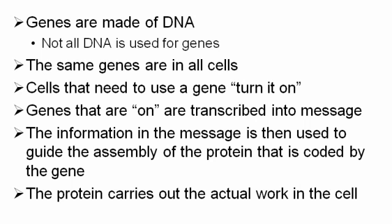And so to summarize this part of the talk, genes are made up of DNA, but not all of the DNA. In fact, very little of the DNA in our bodies is used actually to make genes. The same genes are in all cells, and so cells that need to use Pax-6 or other types of transcription factors need to turn the genes on. A cell does this by transcribing the gene into a message, and so a gene that is on will be transcribed into a message that we can see in the embryo just like the Pax-6 stain in the mouse embryo that I showed you a minute ago.